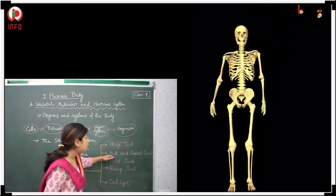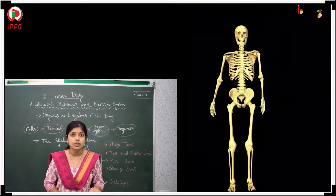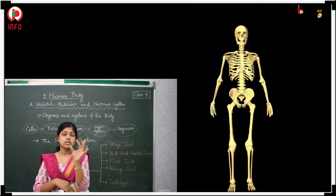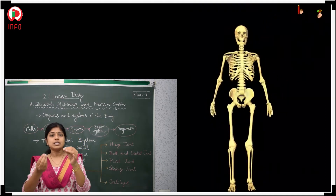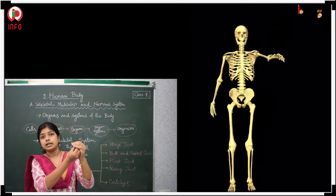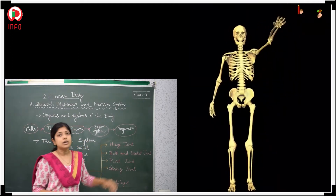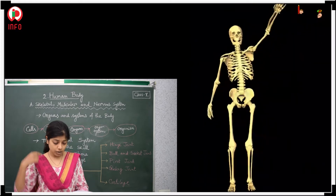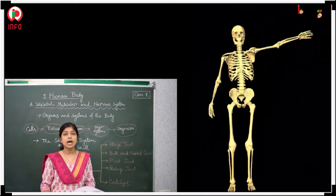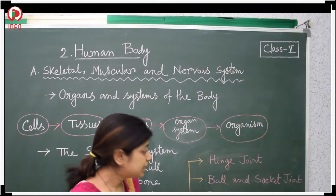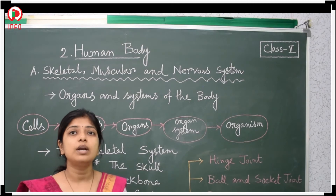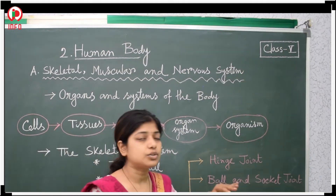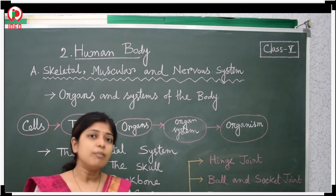Now let us have a look at the ball and socket joint. When one bone consists of a socket-like structure and another bone's ball is fitted into it, this is called the ball and socket joint. It is available in our shoulder and in our hip. The hinge joint allows only one-direction movement, while the ball and socket joint allows movement in many directions.